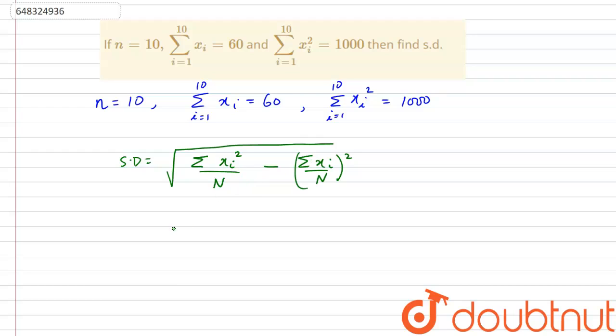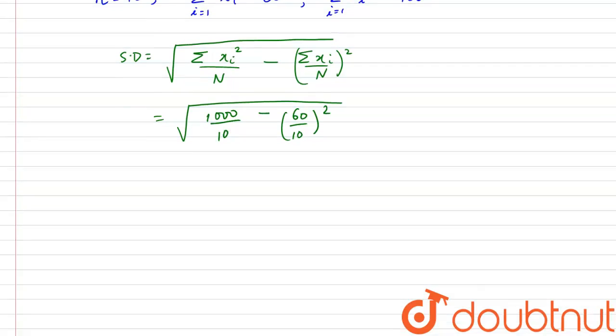So let us calculate what this is. This is equal to under root of we have the summation of xi squared that is 1000 divided by n that is 10 minus the summation of xi that is 60 divided by n squared. So let us find what this is.